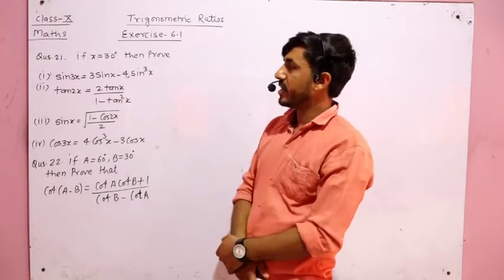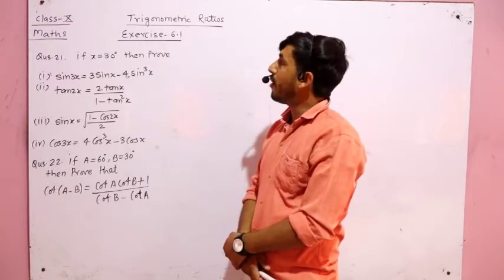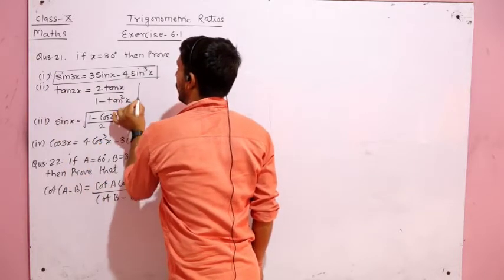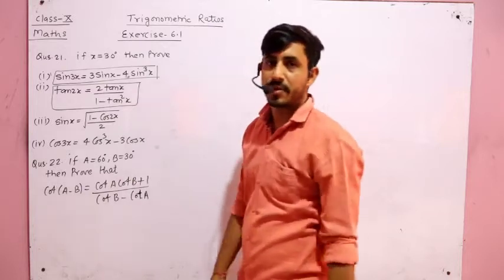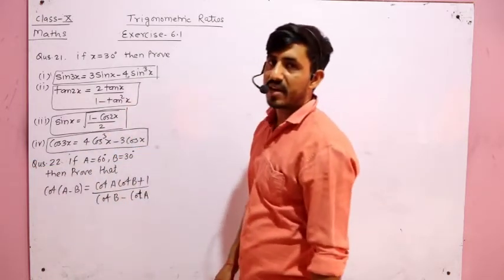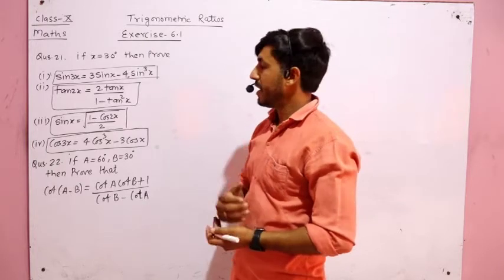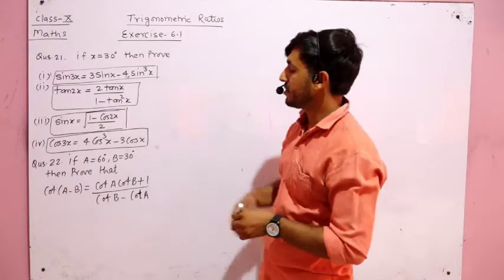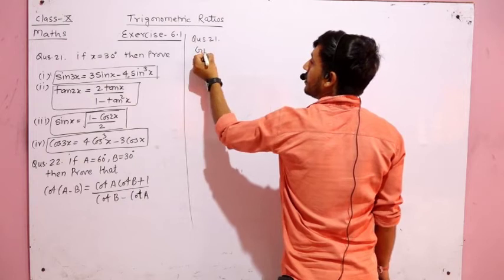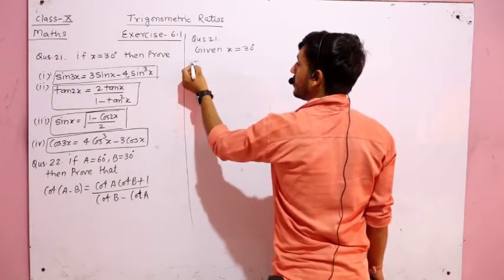All four parts of question number 21 are the standard and important formulas of trigonometric functions — we have to try to remember all of them. First we will study them, then try to remember. Now discussing question number 21 part 1: given x is equal to 30 degrees, prove that sin 3x = 3 sin x − 4 sin³ x.